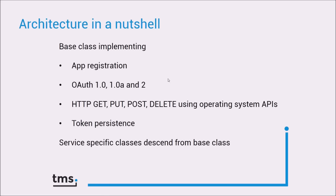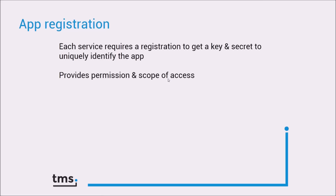From this base class implementing all this core functionality, we descend several classes that implement the specific cloud service functionality. The first part is the application registration. For accessing a cloud service, you need to apply for an application key and secret from the cloud service itself by registering your application, and you need to set up this key and secret with the component. This includes also specifying your scope of access — for example, a service can give you scope to read information, or you may need a specific scope to perform both read and write.